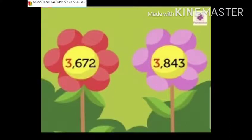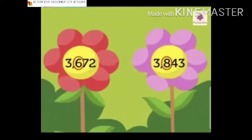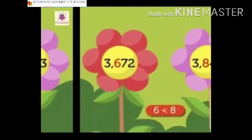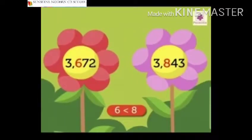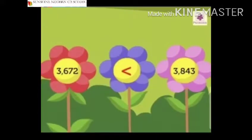The digits are the same here. So now we compare the digits in the hundreds place, that is 6 and 8. The digits are different here. Here 6 is smaller than 8, so the number 3672 is smaller than the number 3843.